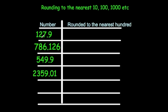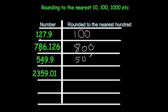Let's look at some more examples with decimals. 127.9: the tens column is a 2, so we round down to 100. 786.126: the tens column is an 8, so we round up to 800. 549.9: the tens column is a 4, so we round down to 500. Finally, 2359.01: the tens column is a 5, so we round up to 2400.